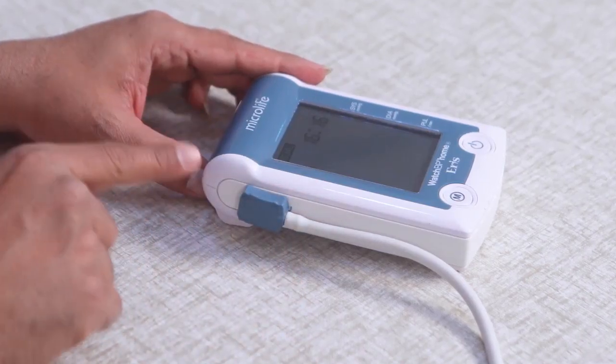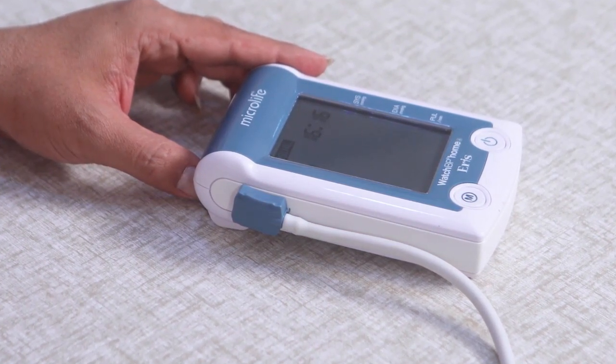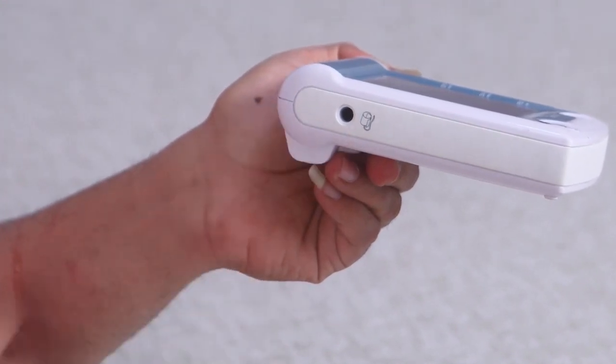Now, observe how the wire is connected to the machine. This is called the connector. The connector is connected to the device through this hollow space.